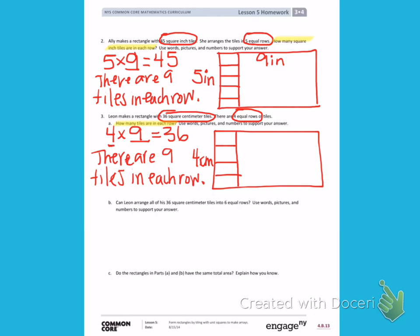Letter B. Can Leon arrange all of his 36 square centimeter tiles into 6 equal rows? Use words, pictures, and numbers to support your answer. I want to use still 36 tiles. But this time I want to arrange them into 6 equal rows. And I want to see if that is possible.